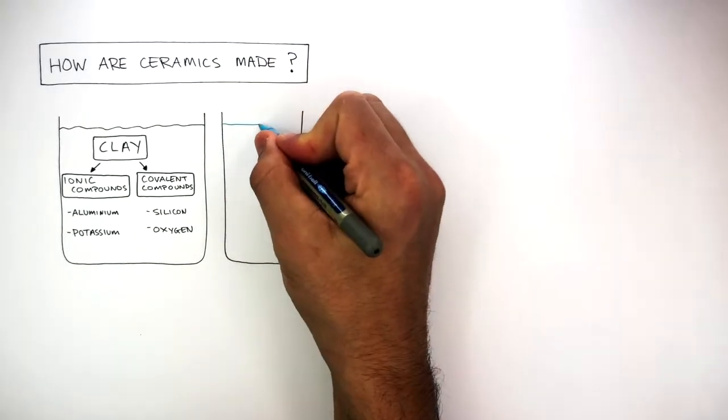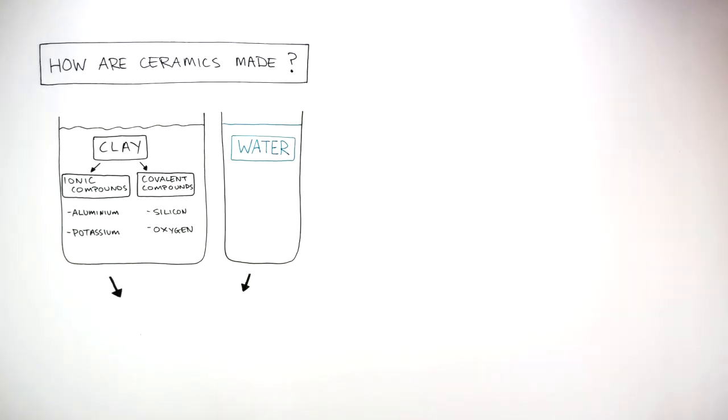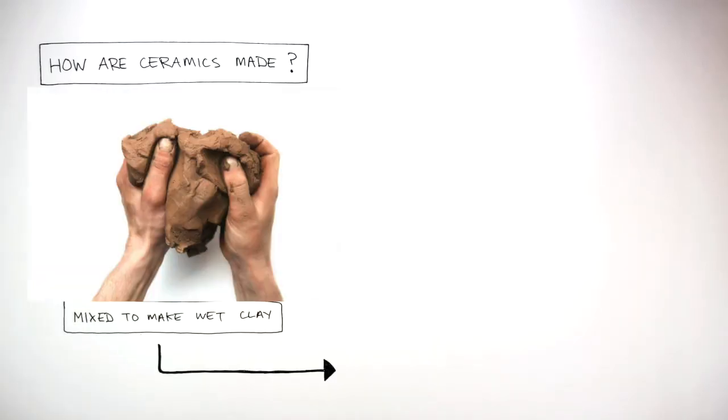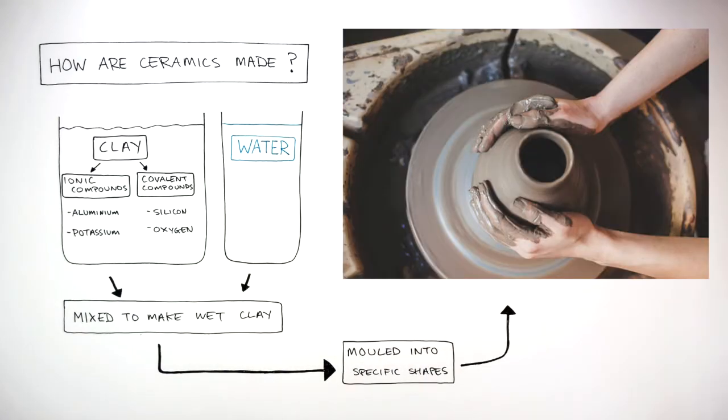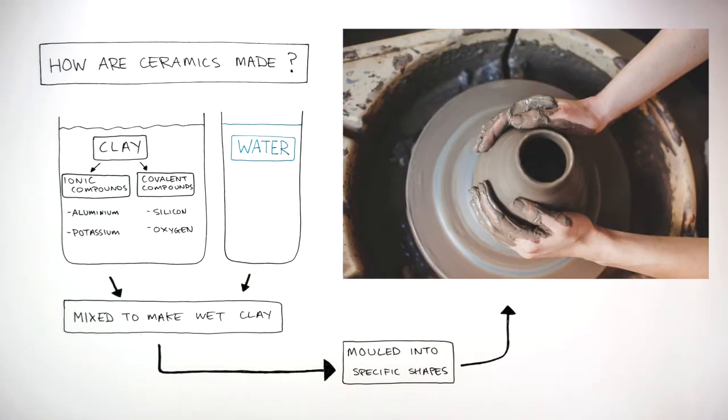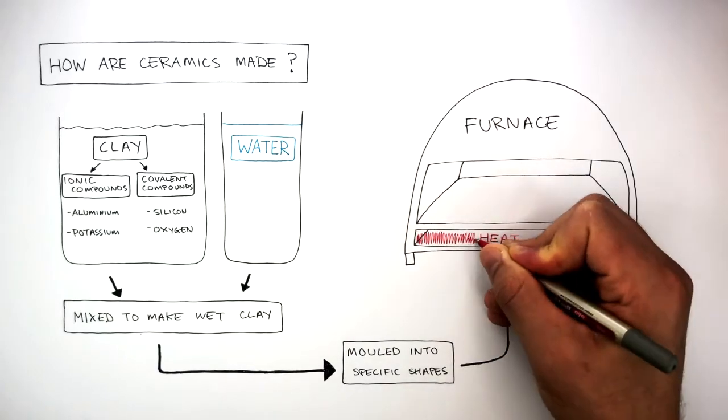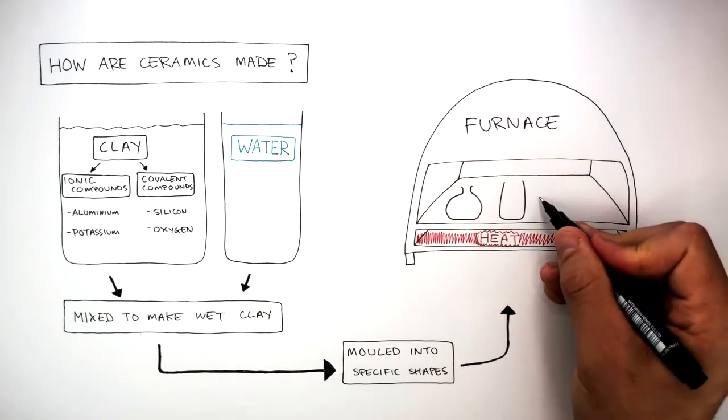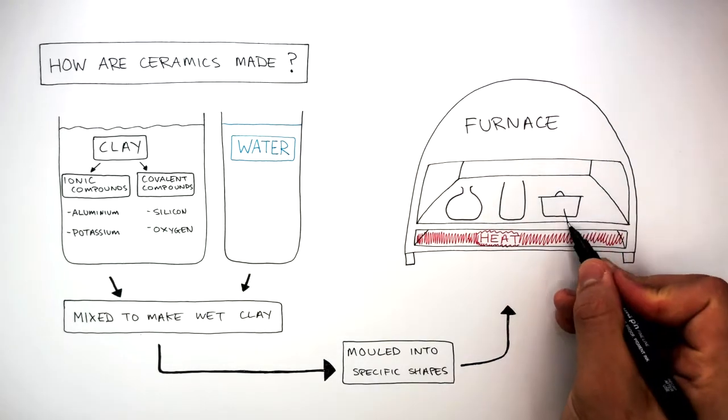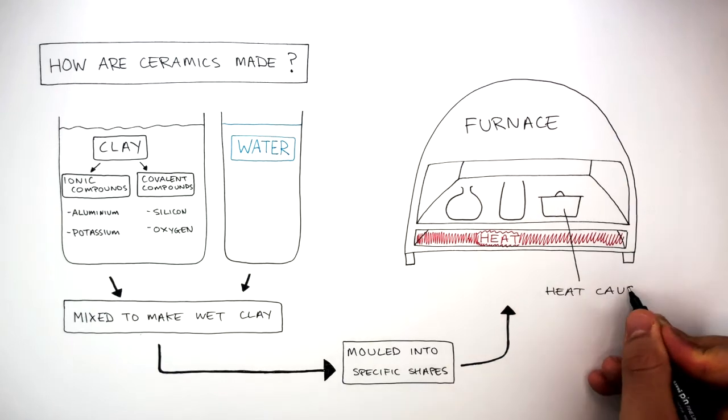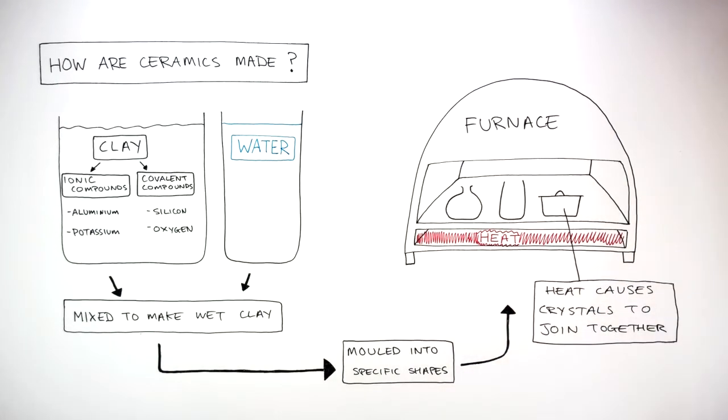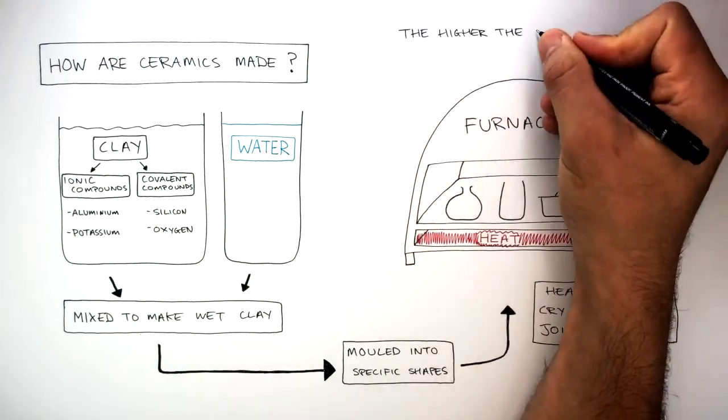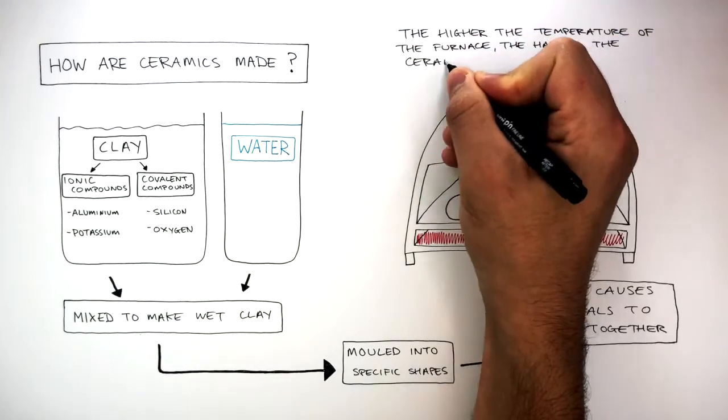Water is mixed with the clay to make wet clay, which can be molded into specific shapes. These shapes are placed inside a furnace with a lot of heat. The wet clay is heated to 1000 degrees Celsius, where the heat causes the crystals to join together. The wet clay hardens, and the higher the temperature of the furnace, the harder the ceramics formed.